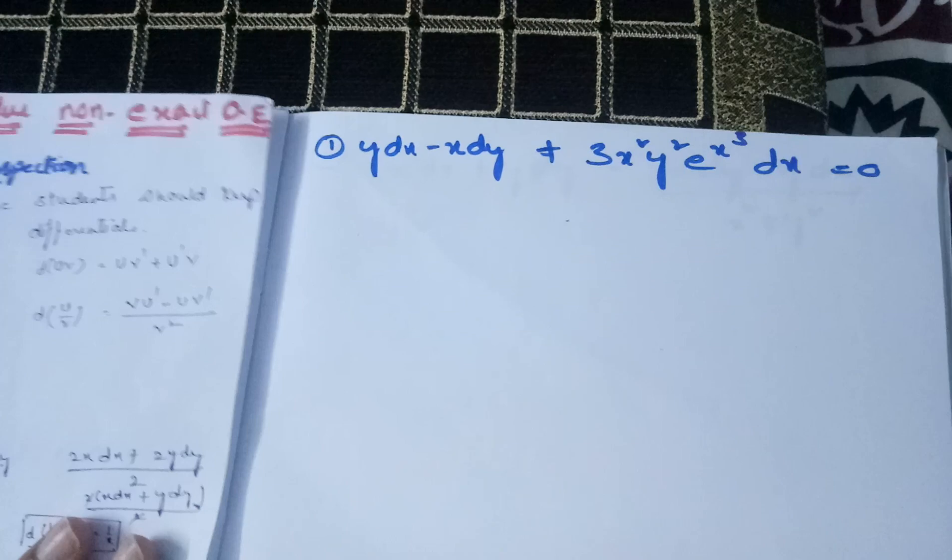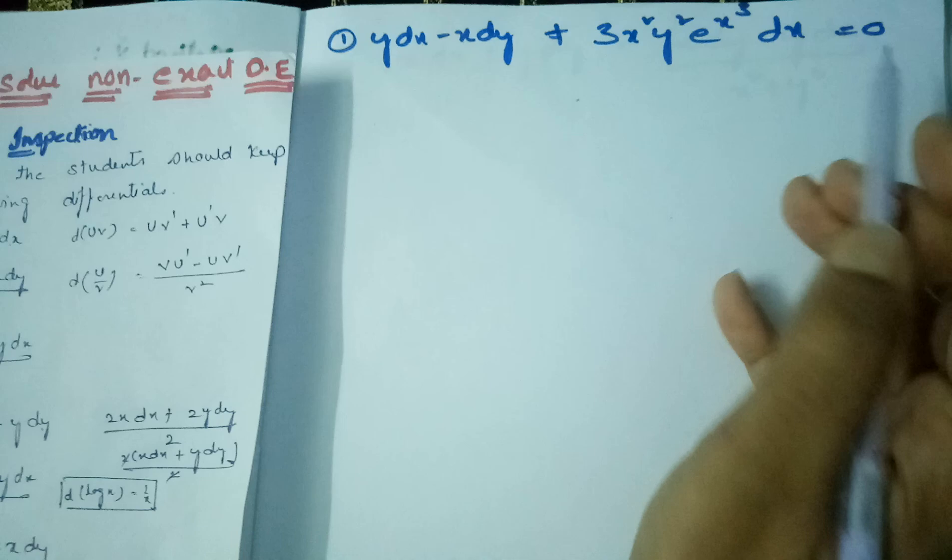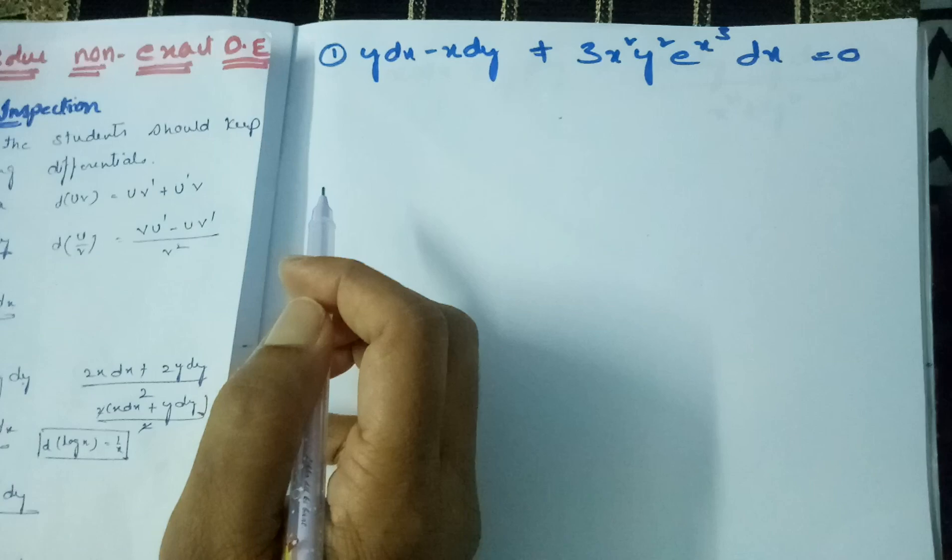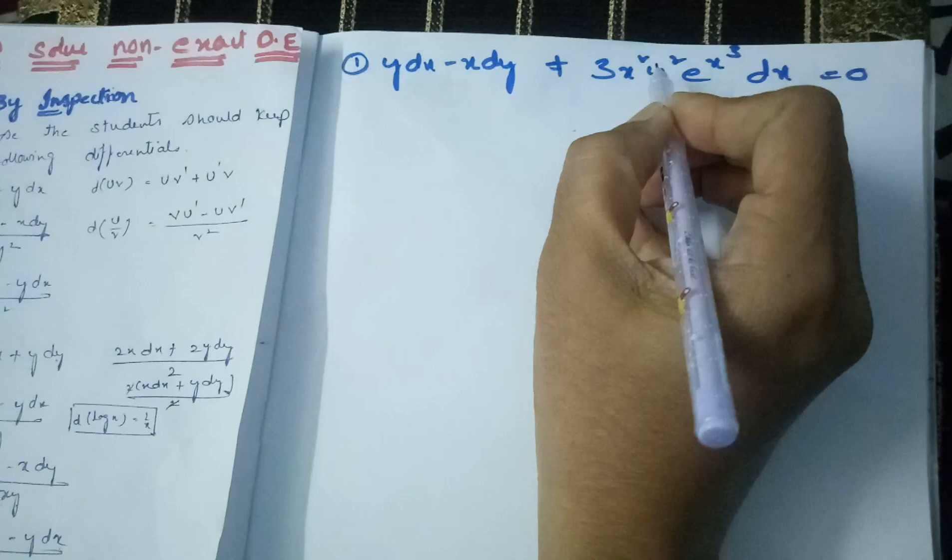The first problem is: y dx minus x dy + 3x²y² · e^(x³) dx = 0. This is clearly a non-exact equation. By inspection, we have to check whether it matches any of the formulae. If you observe carefully: y dx minus x dy + 3x²y² · e^(x³) dx.